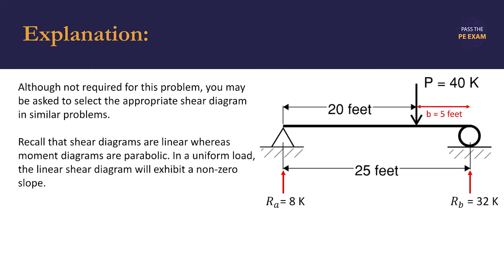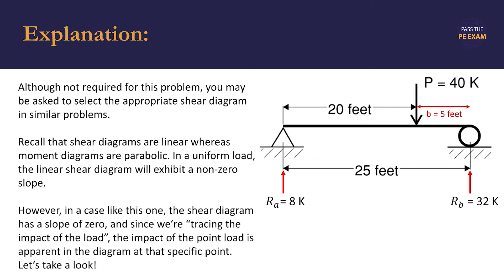Recall that shear diagrams are linear whereas moment diagrams are parabolic. In a problem with uniform loads, you would see the linear shear diagram exhibiting a non-zero slope, so the line for shear would not be horizontal.